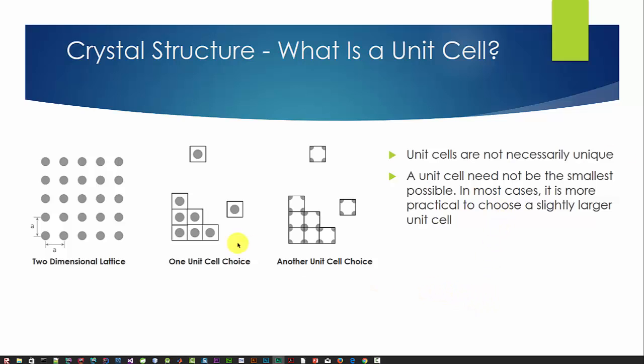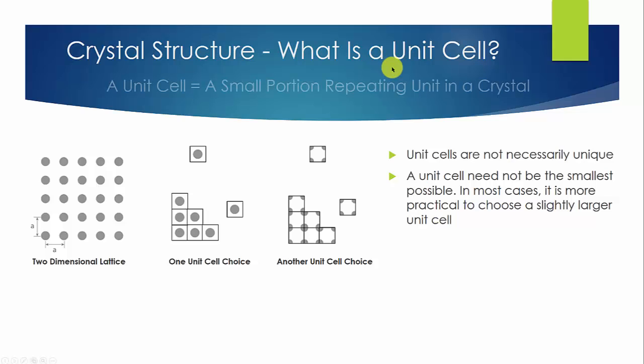A crystalline structure has a completely ordered structure, which means that they have a three-dimensional repeating pattern. We can describe a crystal by specifying the size, shape, and contents of the simplest repeating pattern. And this three-dimensional repeating pattern is called a unit cell.